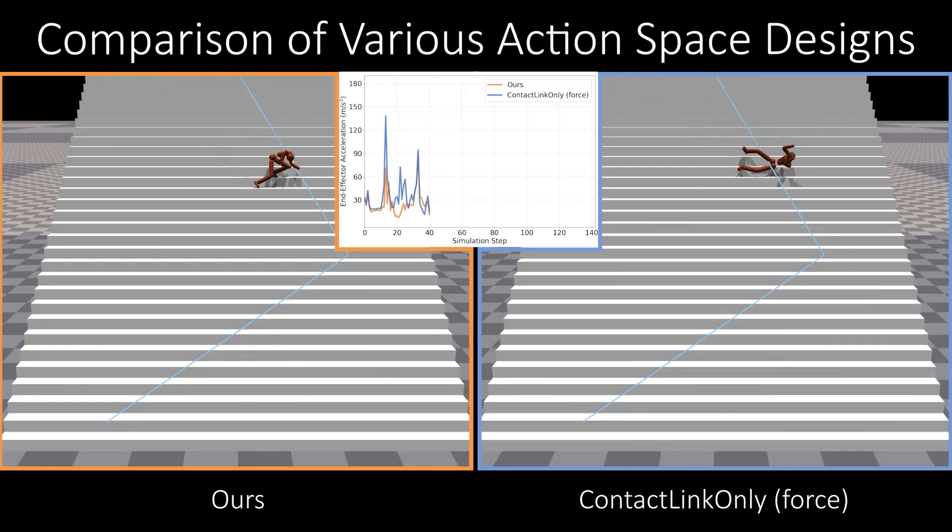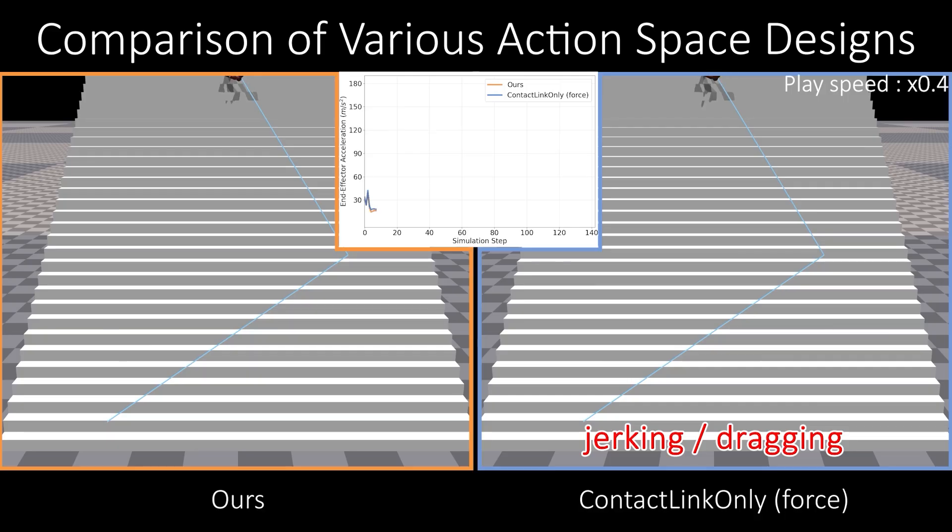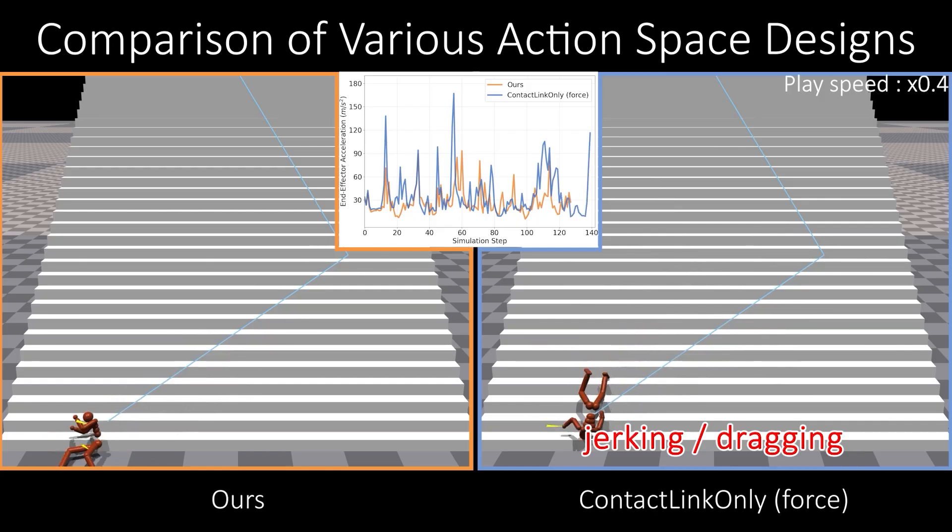Contact-link-only force applies forces proportional to contact forces on specific body links. The graph in the middle shows that contact-link-only force causes high end effector accelerations due to external forces being concentrated on a few contact links, resulting in abrupt movements like jerking or dragging.